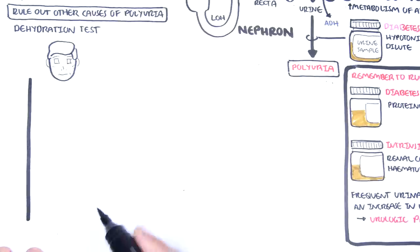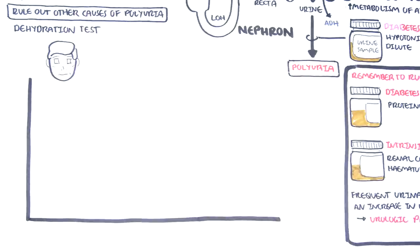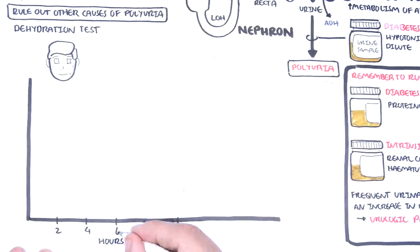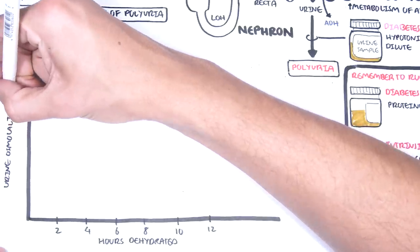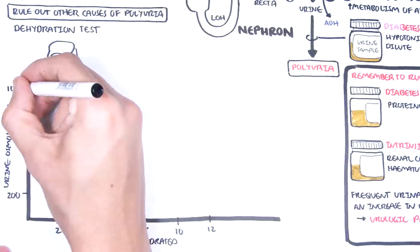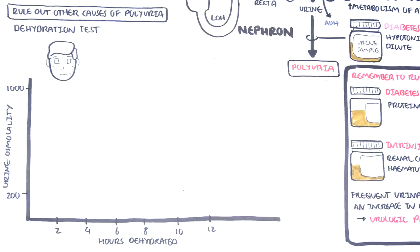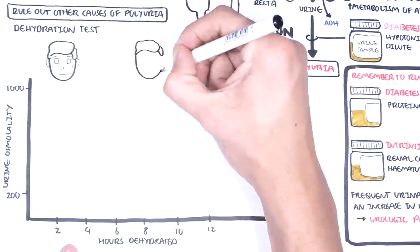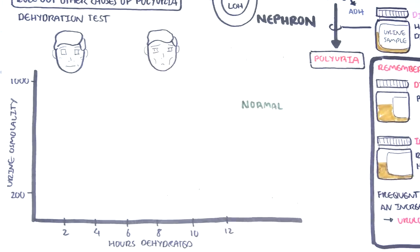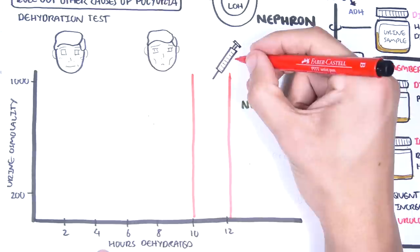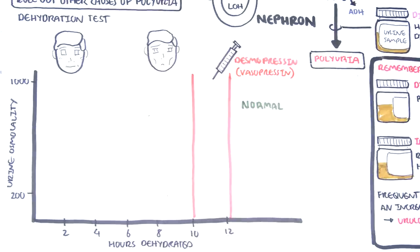The dehydration test involves getting the person not to drink for up to 12 hours. The x-axis is hours, and the y-axis is urine osmolality — how concentrated the urine is. The higher the number (e.g., 1000), the more concentrated the urine. Urine is concentrated when we are dehydrated. By hours 10 to 12, desmopressin is given IV. Desmopressin is essentially the same as vasopressin, an antidiuretic hormone, and its administration should make the urine even more concentrated as the body wants to retain water.